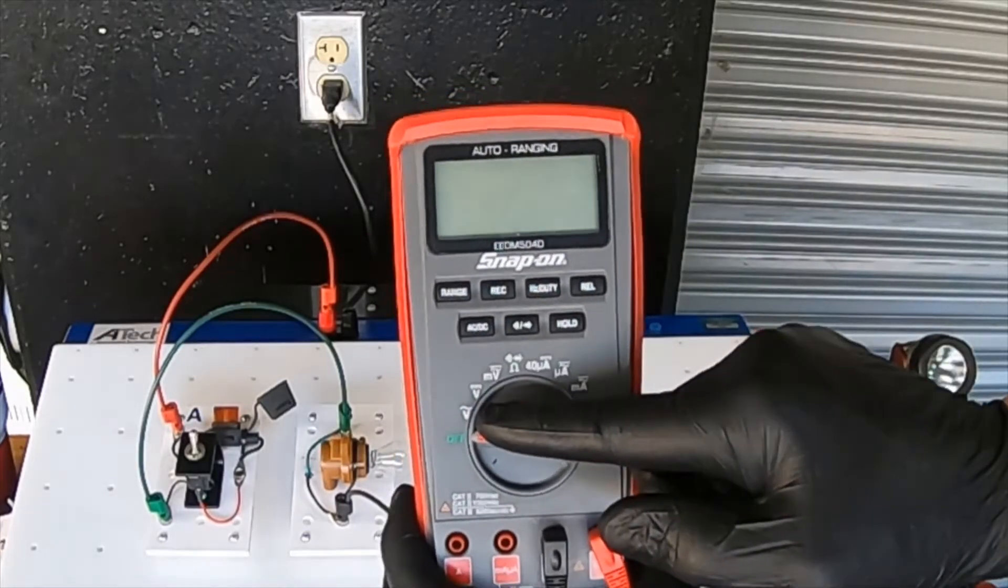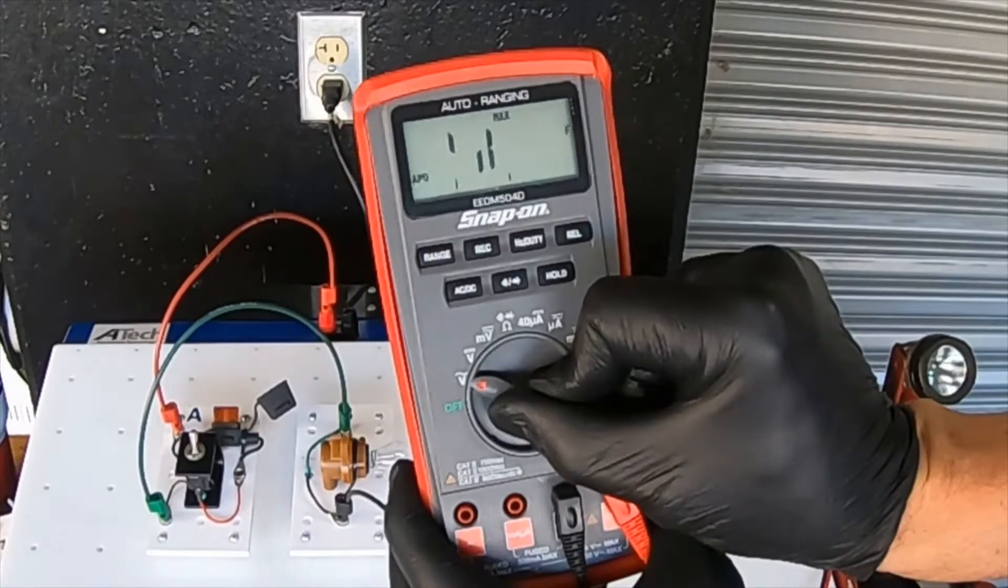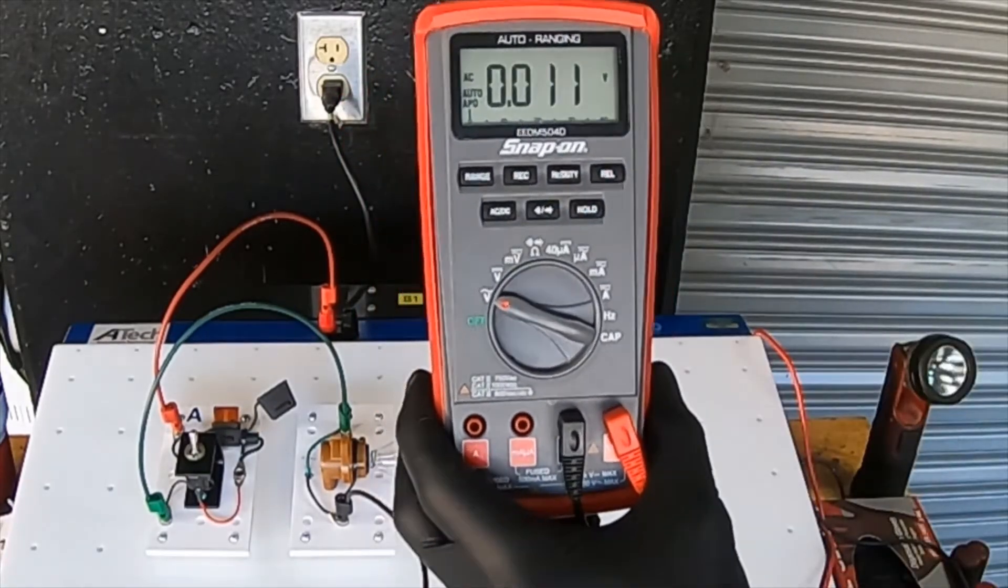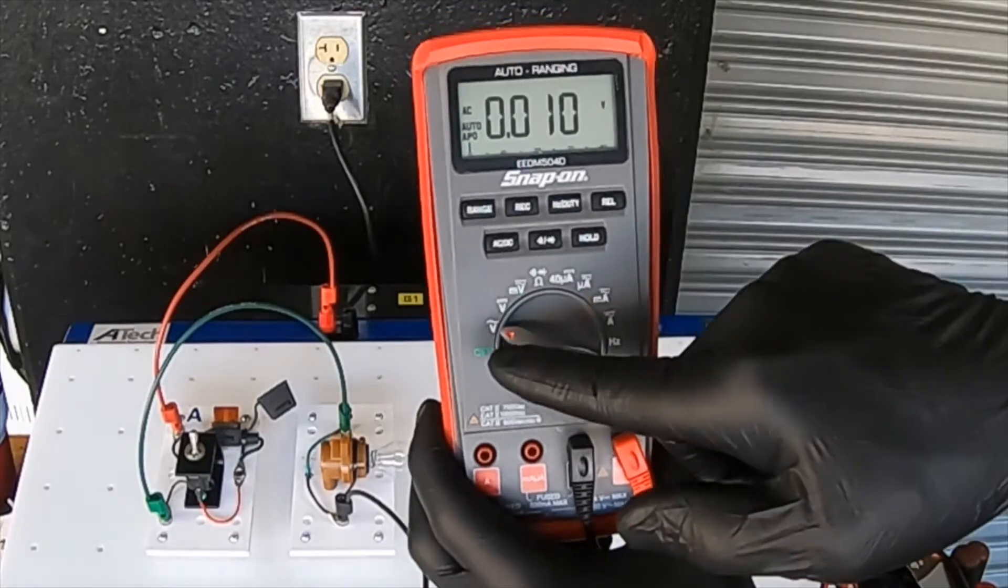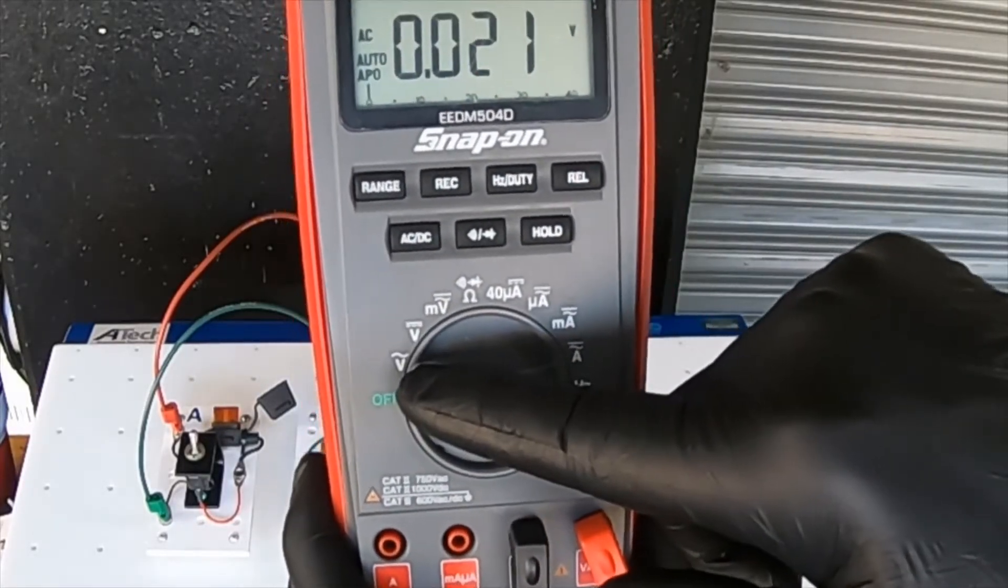So we are going to go ahead and measure AC voltage first. You are going to flick your dial to the AC volt symbol. As we discussed when we got familiar with this tool, the AC voltage symbol is the letter V with the sine wave over the top.